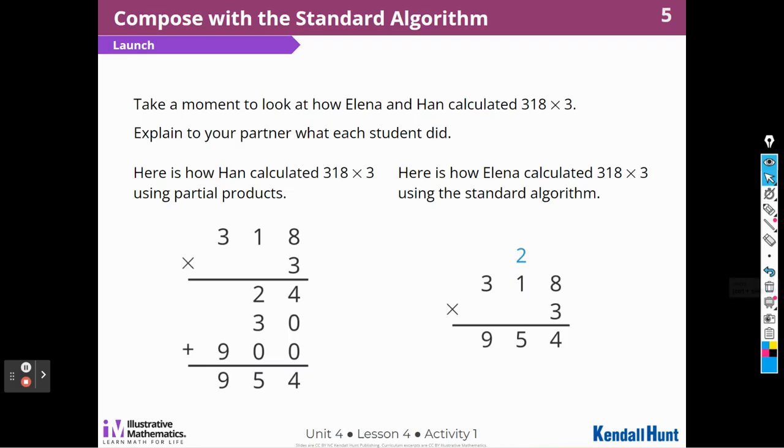Let's move on then. Take a minute to look at how Alina and Han calculated 318 times 3. Explain to your partner what each student did. So here's how Han calculated 318 times 3. I think he did 8 times 3 is 24, 3 times 10 is 30, and then 3 times 300 is 900. And then he added all of those partial products up, and he got 954.